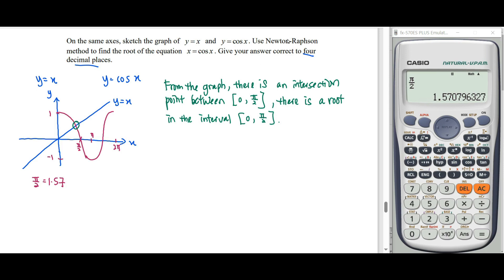After that we have to use Newton-Raphson method to find the root of x equals cos x. For the equation x equals cos x we need to form it in function form, so we move it to the left hand side and let it equal to 0.